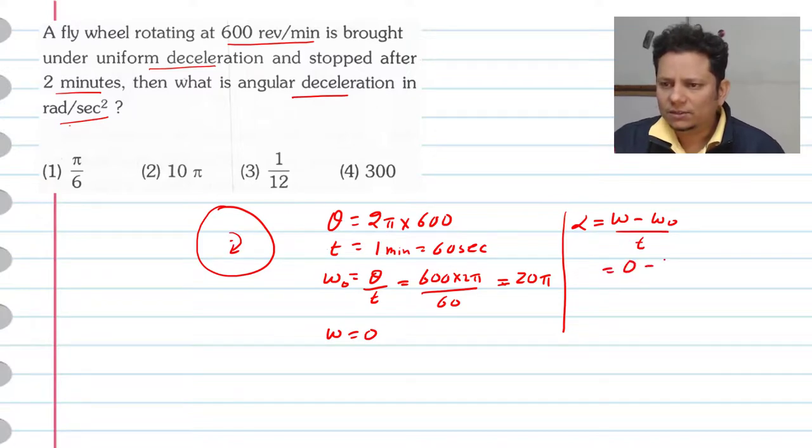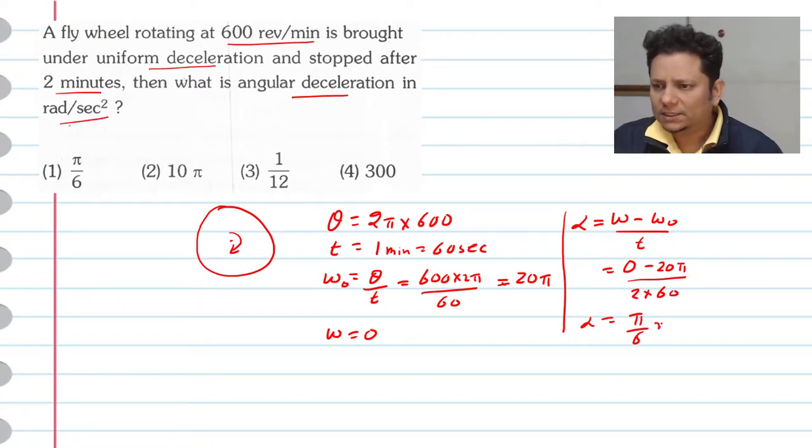And its value is 20π divided by time taken is 2 minutes. So alpha is 2 multiplied by 60. So alpha is 20π divided by 2, cancel, and its value is π by 6 radian per second square.